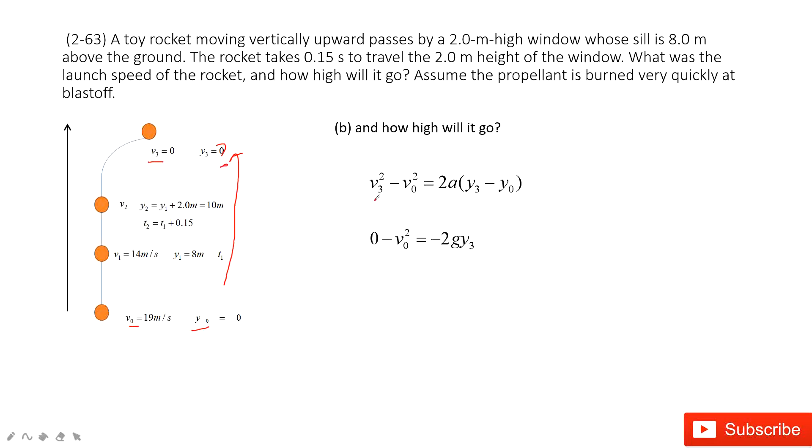The v3 is 0, acceleration is negative g, y3 is there, y0 is there, and then we solve it. We get y3 is v0 squared divided by 2g. And then we solve it, it's 18 meters.